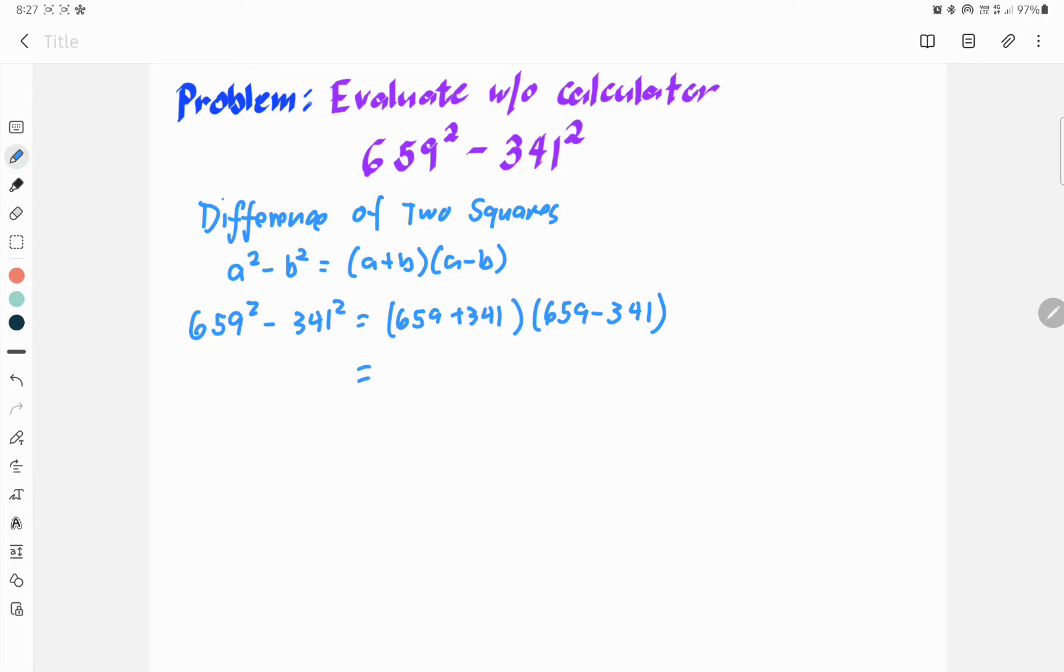As you can see, if we add 659 and 341, that's 1,000. I think this would be much easier. And then, this is now 318.